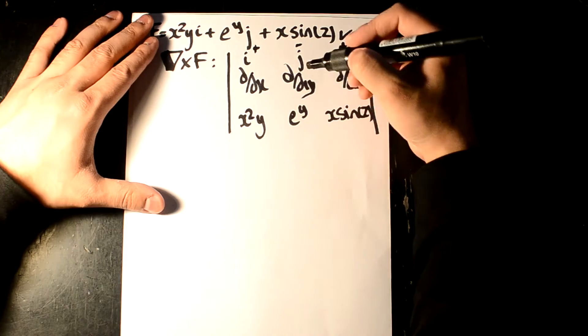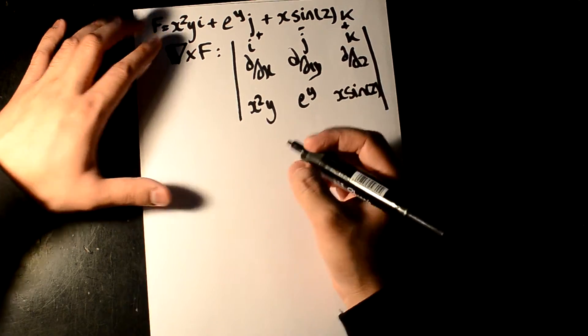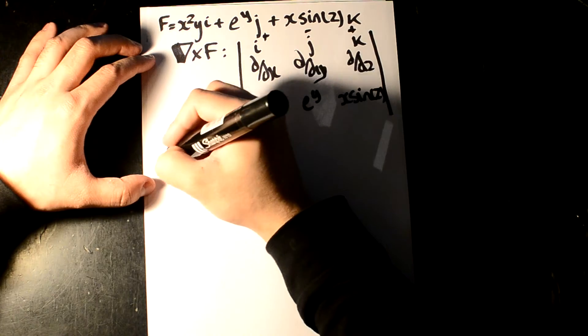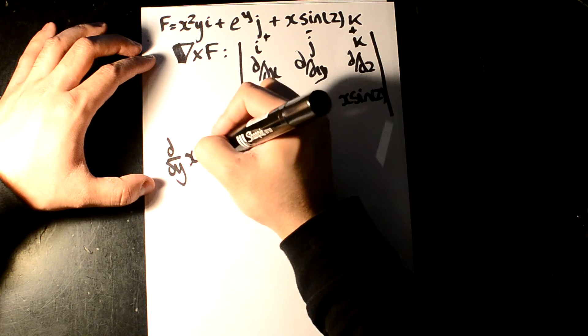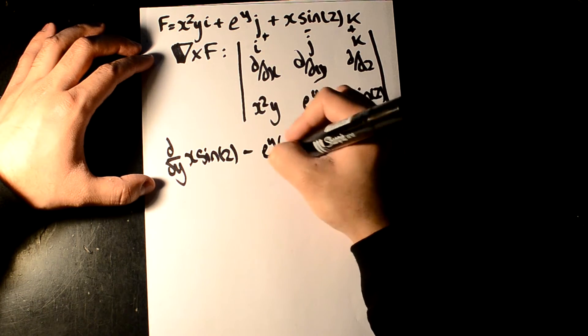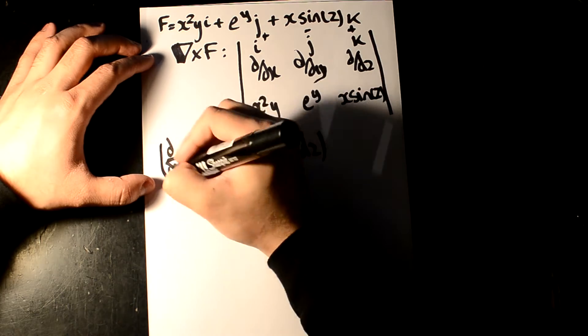We just see that it's this times this minus this times this. So for the first term, we're going to get d over dy, x sine z, minus e to the y, d over dz, i.